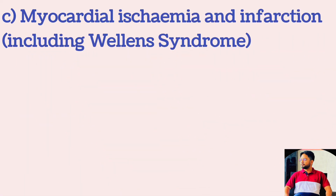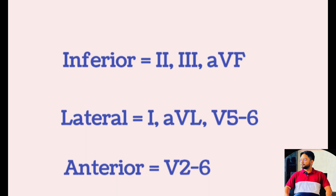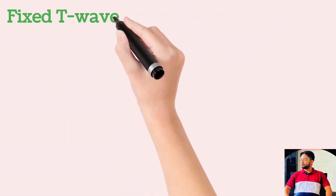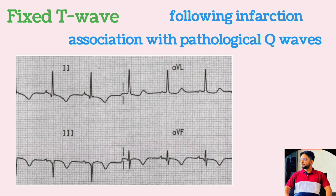Myocardial ischemia and infarction: T-wave inversion due to myocardial ischemia or infarction occurs in contiguous leads based on the anatomical location of the area of ischemia or infarction. In inferior MI it is seen in leads 2, 3, and AVF. For lateral MI it is leads 1, AVL, V5, V6, and for anterior MI it is V2 to V6. Dynamic T-wave inversion is seen with acute myocardial ischemia, while fixed T-wave inversion is seen following infarction, usually associated with pathological Q-waves.